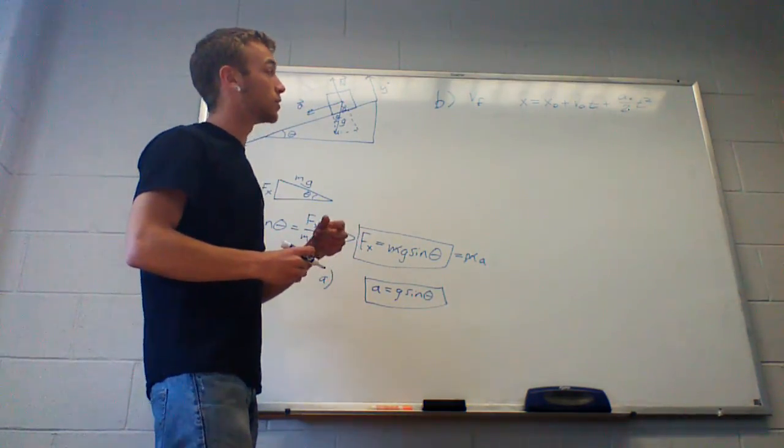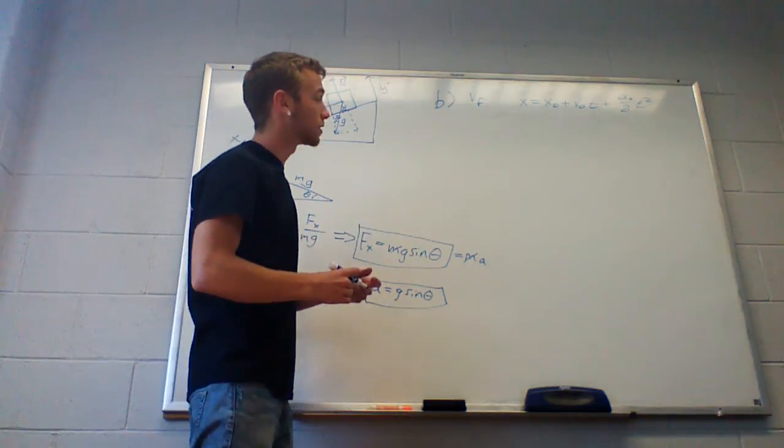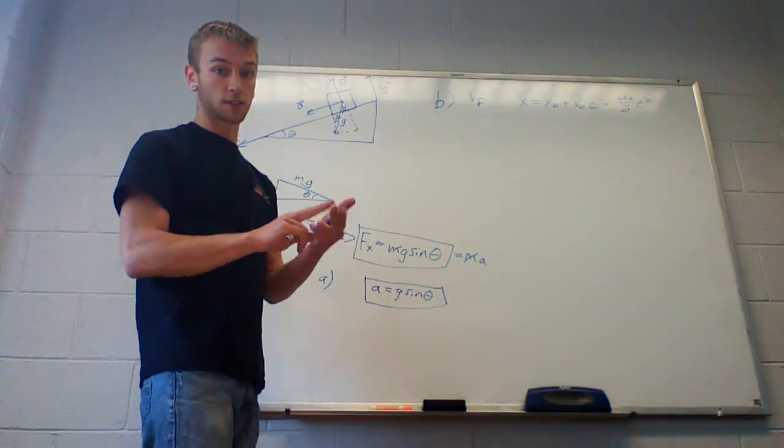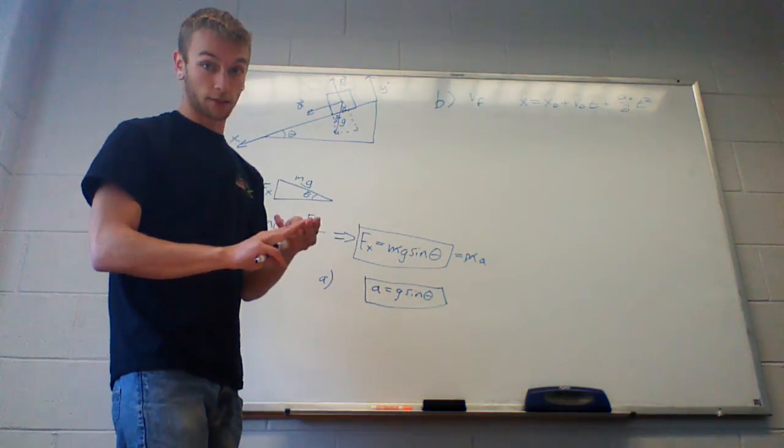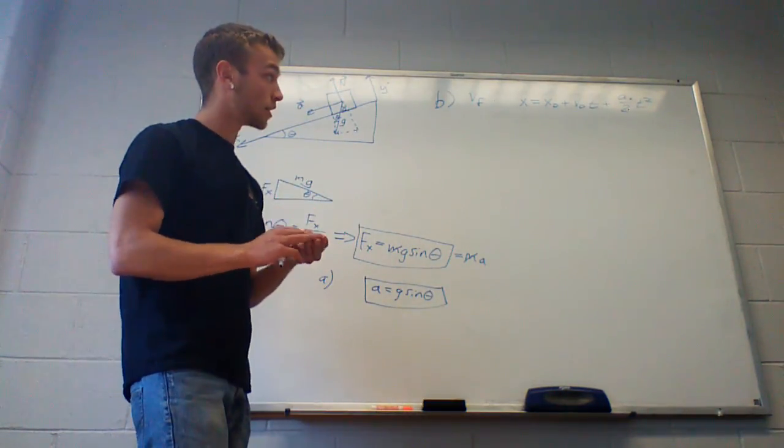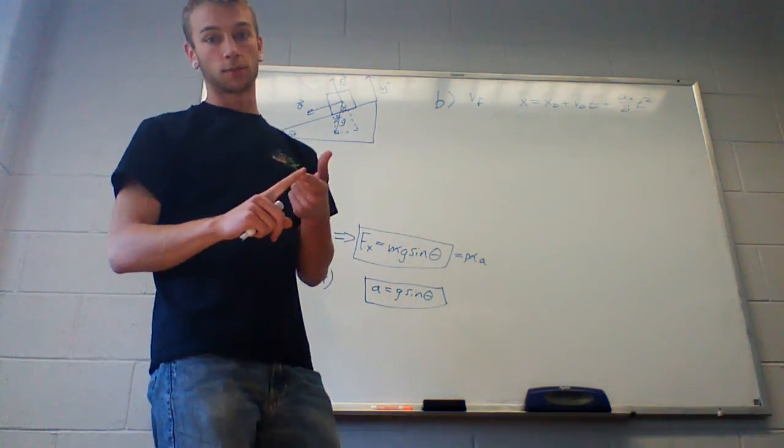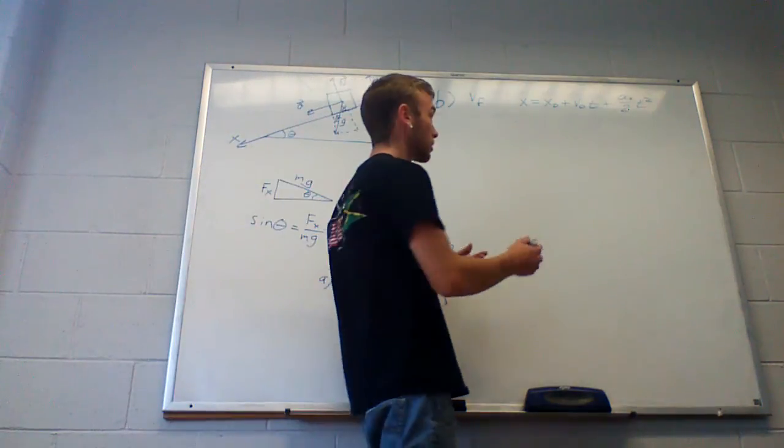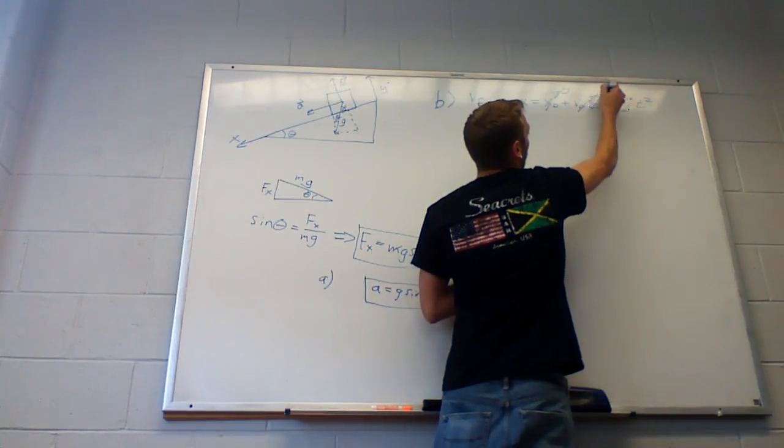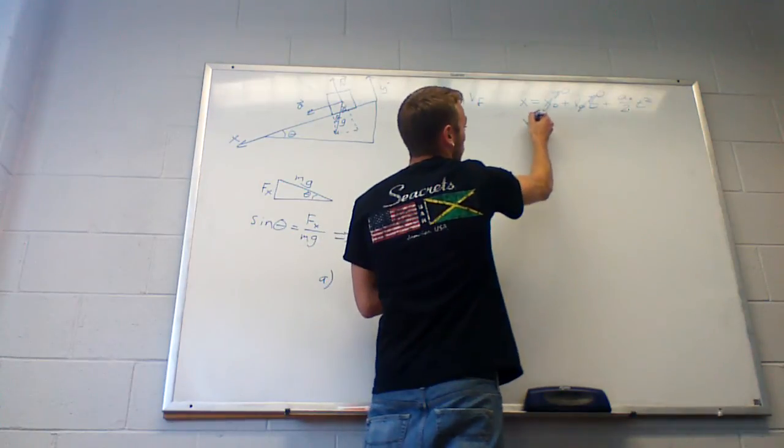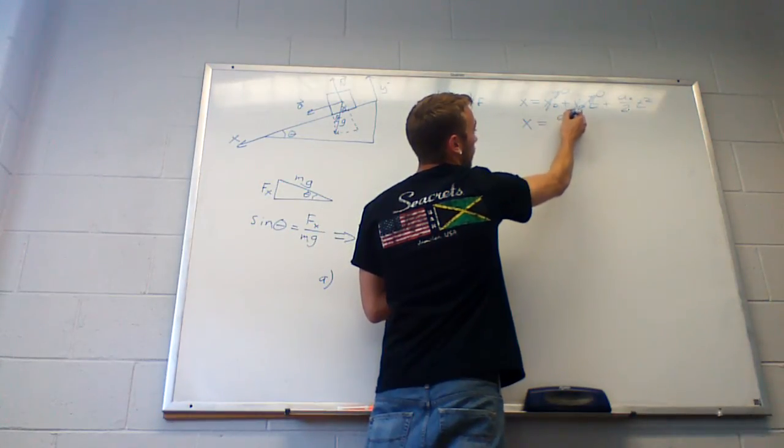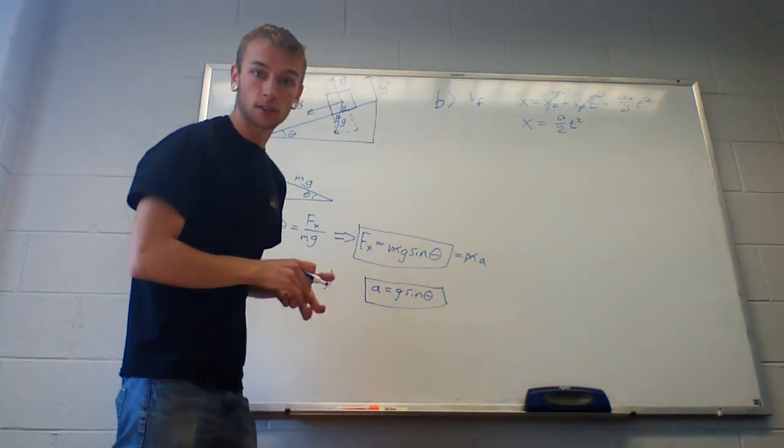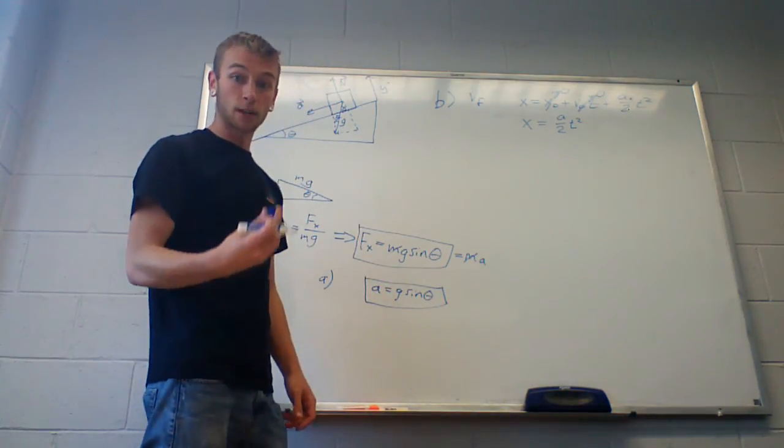And what you see here is it has terms initial position, initial velocity, and acceleration, the average acceleration. We know that our initial position is zero, and our initial velocity is zero, so both of those terms go away. And what we're left with is basically X equals A over 2, A divided by 2, T squared. Where this T is any time T during the motion.